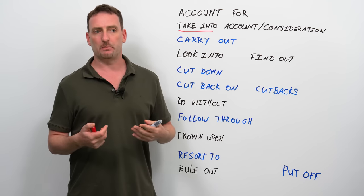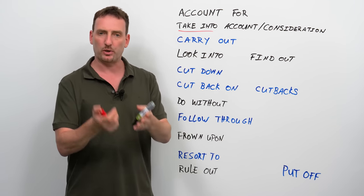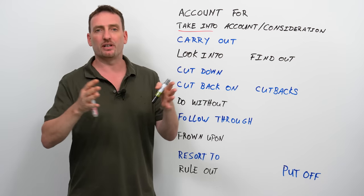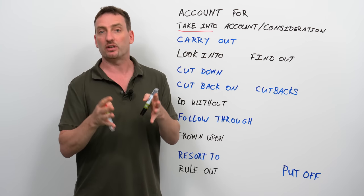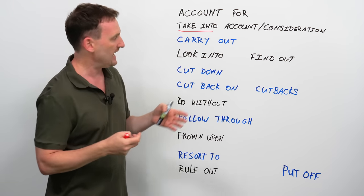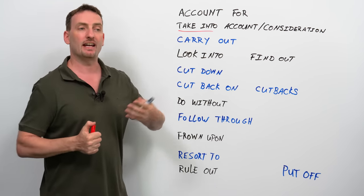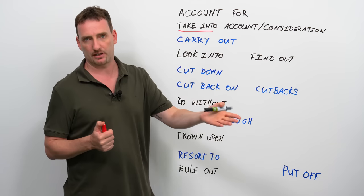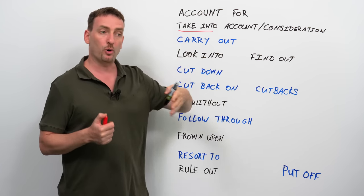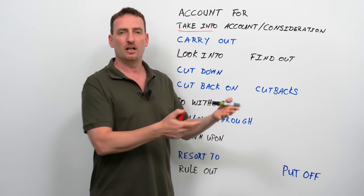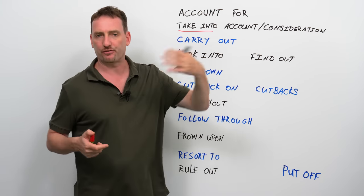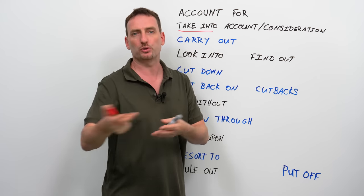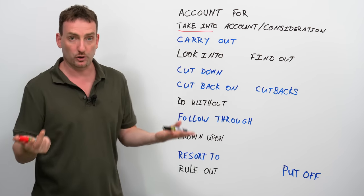Now, carry out. Carry out essentially means do. But we use it with specific collocations, and collocations are groupings of words that generally go together to create a particular expression. So, for example, you would carry out an experiment. You don't do an experiment. You carry out an experiment. So, it means do or make happen. So, for example, you have plans. You create plans for the weekend, and then the weekend comes, and now it's time to carry out those plans. Make them happen. Do them.